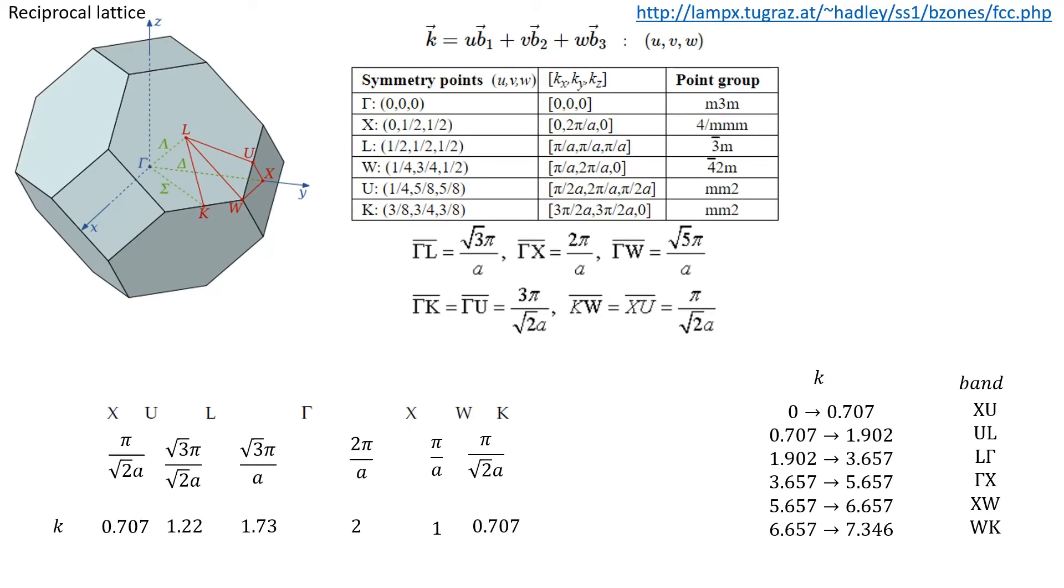The first thing to get the dispersion diagram is to define the reciprocal lattice vectors. For this structure it's very hard to imagine, but I found a nice website that provides you with the reciprocal lattice vectors in 3D and also the symmetry points of Brillouin zones.